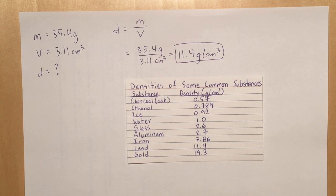The given numbers are written on the left hand side of the paper. The mass is 35.4 grams, the volume is 3.11 centimeters cubed, and we're looking for the density.